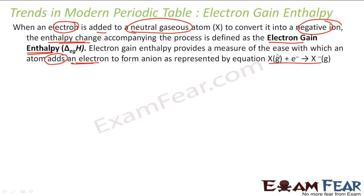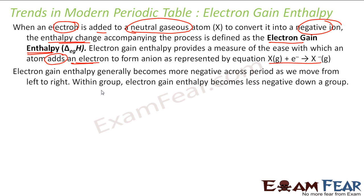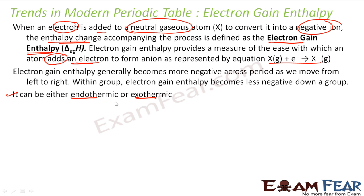The equation is: you have a neutral gaseous atom, you add an electron, and it becomes a negatively charged ion. This process can be exothermic or endothermic — meaning either energy is liberated or energy is required. If the value is negative, energy is liberated; it is exothermic. If positive, energy is required. So it can be positive or negative.